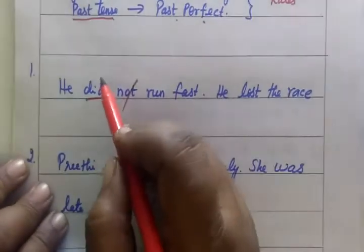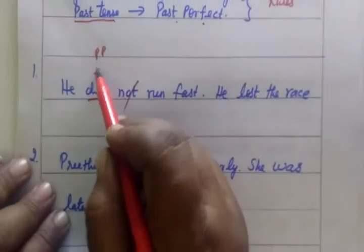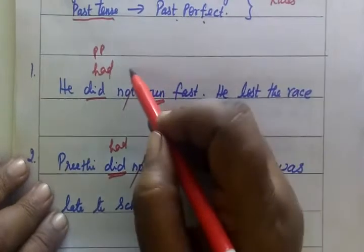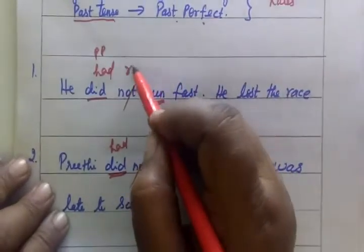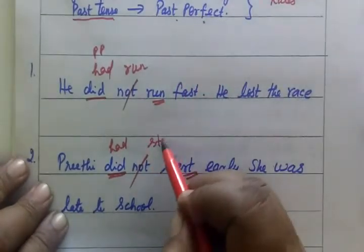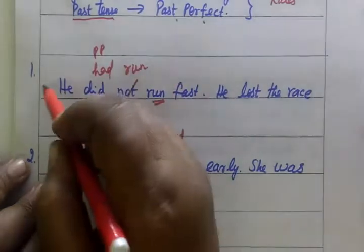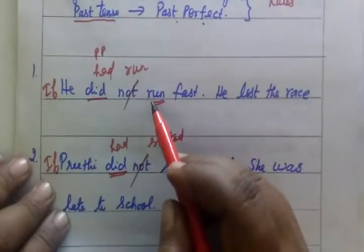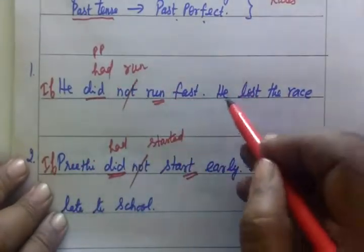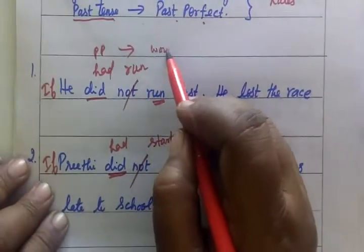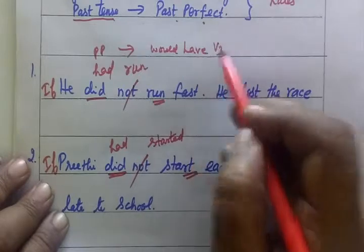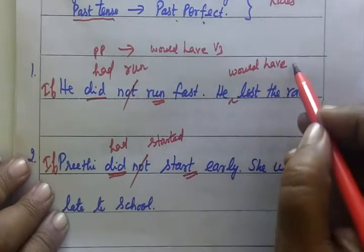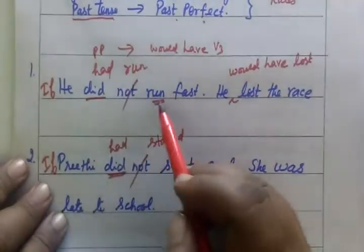This is past tense, then we will write it in past perfect using 'had' and the third form. Run in third form is 'run.' So if he had run fast — the structure is: would plus have plus third form, so you write 'would have lost.' If he had run fast...